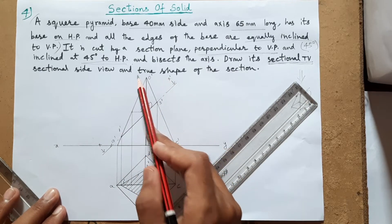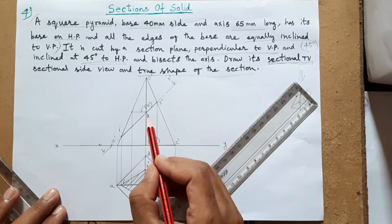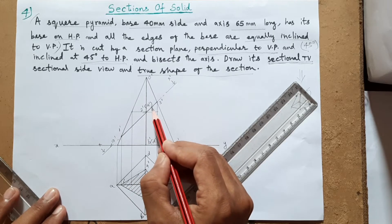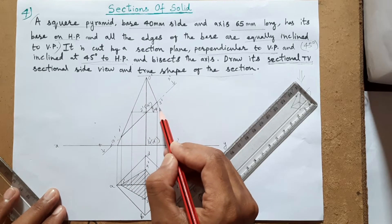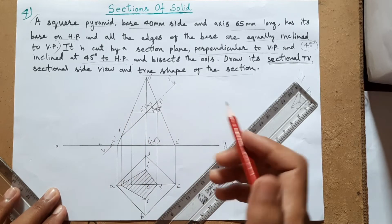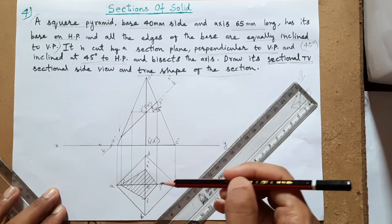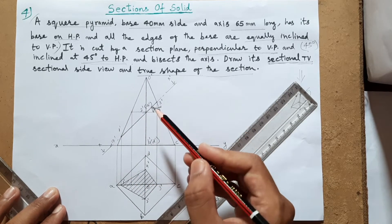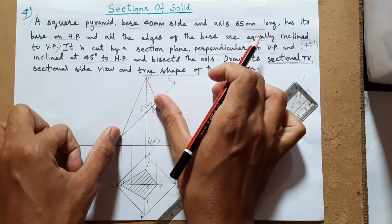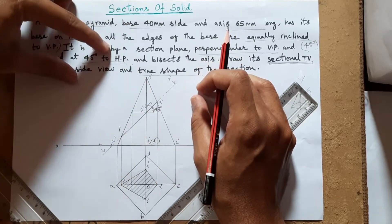This is called the sectional top view. Next we have to draw the sectional side view, and afterwards the true shape of the section. True shape is required whenever the cutting plane is inclined at a certain angle. If it were parallel to HP or zero degrees to XY, the true shape would be visible in the top view itself. Since it is inclined, from the top we cannot see the full size - this is full size and this is reduced size, so we have to view from the side.